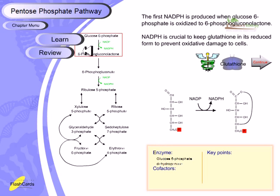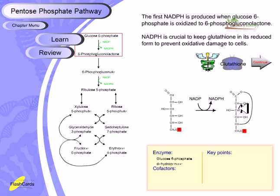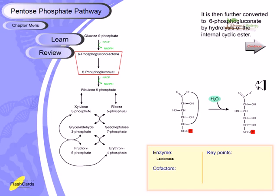The enzyme that converts glucose-6-phosphate into 6-phosphogluconolactone is called glucose-6-phosphate dehydrogenase. Any dehydrogenase reaction inside the cell will generate NADPH from NADP+ or NADH from NAD+. In this picture, you can see the structural change: the CHOH group is converted as the molecule travels through the reaction to produce 6-phosphogluconolactone.